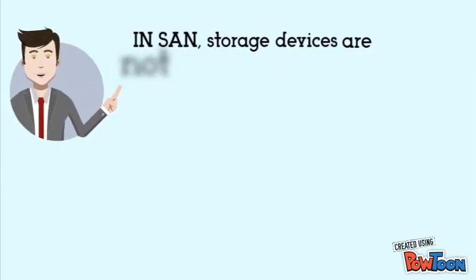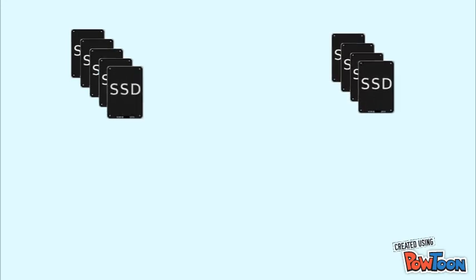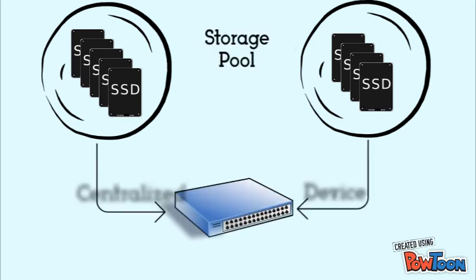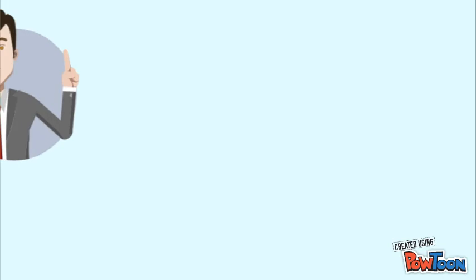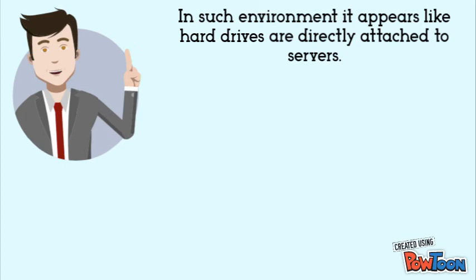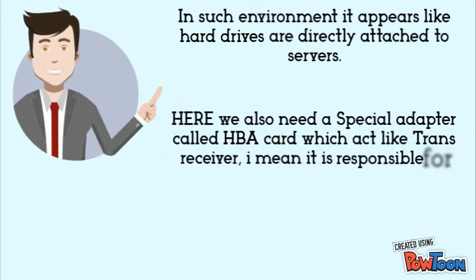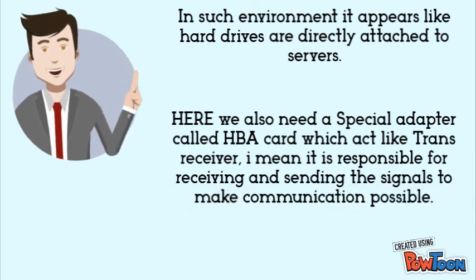In SAN, storage devices are not directly attached to the servers. Instead, it is a collection of many hard disk drives — we can also call it a storage pool. This type of storage and servers are connected to a centralized device called a switch, through fiber cable or iSCSI cable. Such a network is called a Storage Area Network. In this environment, it appears as if hard disk drives are directly attached to the servers. We also need a special adapter called an HBA card, which acts like a transceiver — it is responsible for receiving and sending signals to make communication possible.